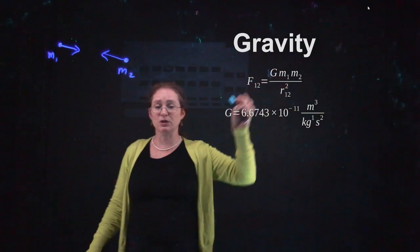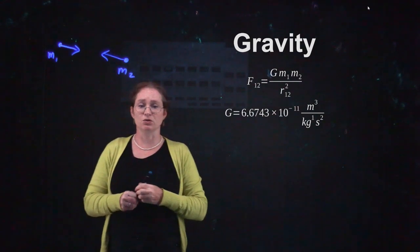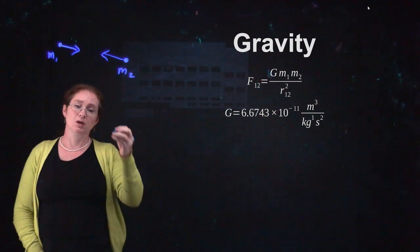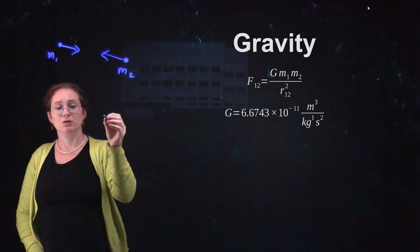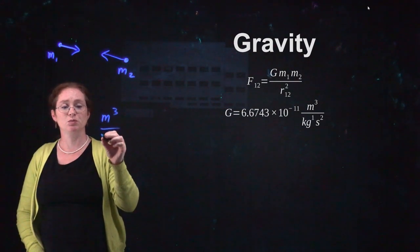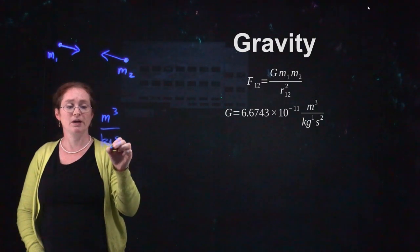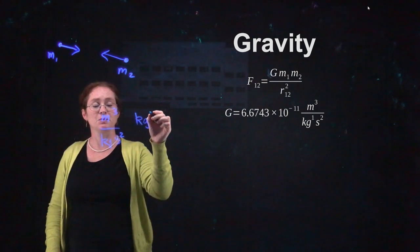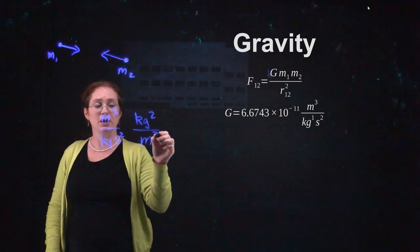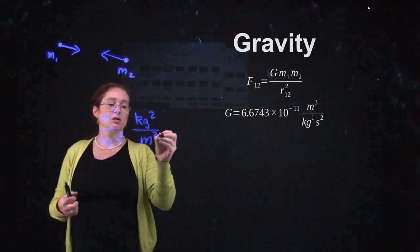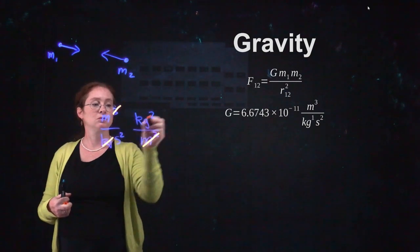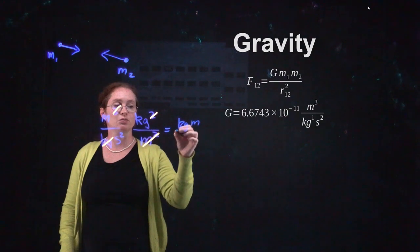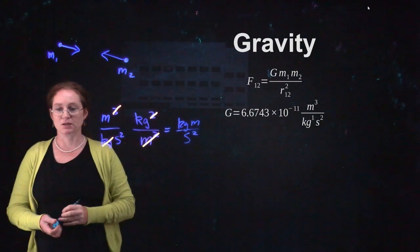G has to have units such that you end up with units of force. The force is proportional to the product of the masses and inversely proportional to the square of the distance between them. Capital G has units of meters cubed per kilogram second squared. When we multiply by the mass squared we get kilograms squared, and dividing by meters squared, we end up with kilogram meters per second squared — which are the units of a force.